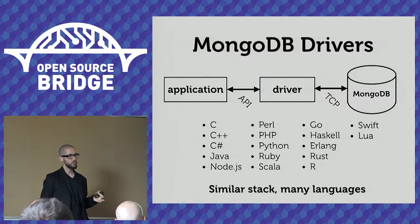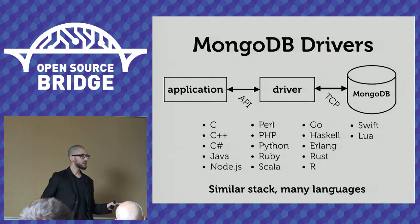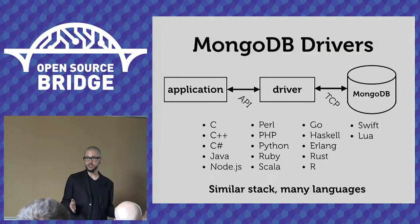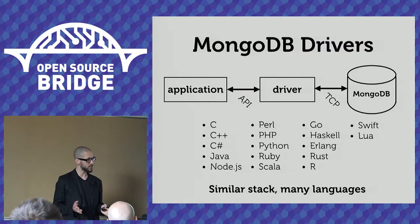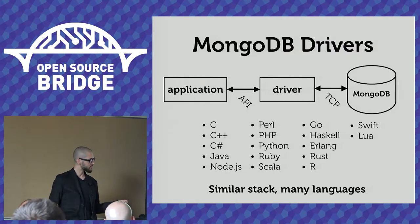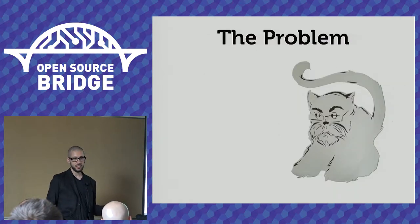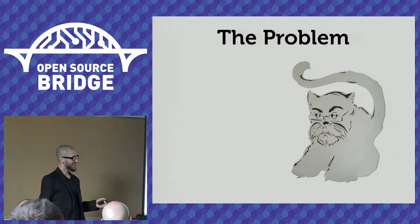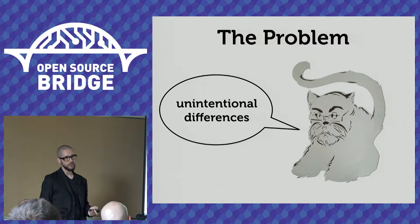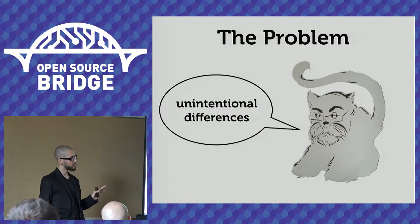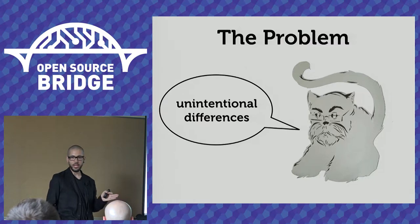We've got possibly as many as 20 different programming languages all implementing the same basic stack. There's a gigantic advantage to this: pretty much any programming language you might reasonably be using has a MongoDB driver. But there's also a gigantic disadvantage. Besides a huge amount of effort, there are differences among them — not really bugs, but reasonable choices that people have made differently where we didn't intend to vary, but we ended up diverging, and we don't know what the variations are.